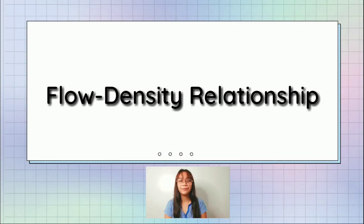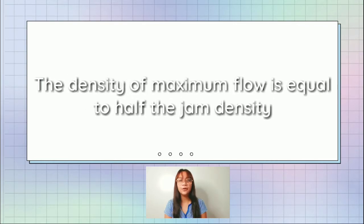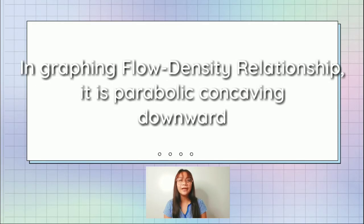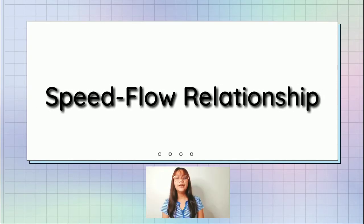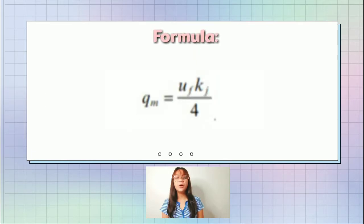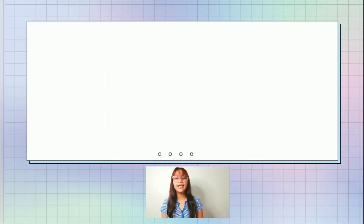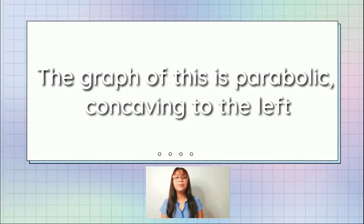Flow-density relationship. The density of maximum flow is equal to half the jam density. In graphing the flow-density relationship, the flow-density relationship is parabolic concaving to the left. Speed-flow relationship. Maximum flow equals free flow value times jam density all over 4. Just like the flow-density relationship, the graph of this is parabolic but concaving to the left.